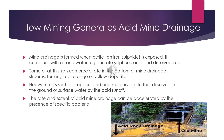How do mines generate acid mine drainage? Acid mine drainage is formed when pyrite and iron sulfide is exposed — it combines with air and water to generate sulfuric acid and dissolved iron. Some or all of the iron can precipitate at the bottom of mine drainage streams, forming red, orange, or yellow deposits. Heavy metals such as copper, lead, and mercury are further dissolved in ground or surface water by acid runoff. The rate and extent of acid mine drainage can be accelerated by the presence of specific bacteria.